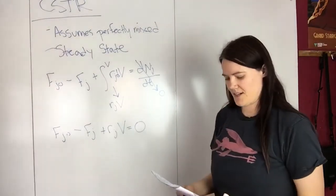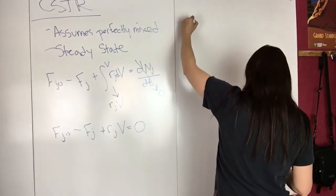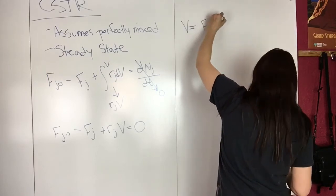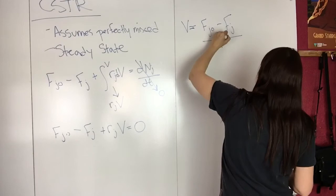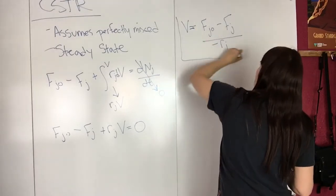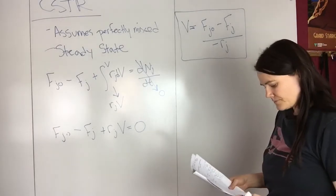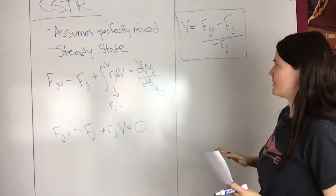What we want from this equation is the volume. We can solve for volume and get V equals FJ0 minus FJ over negative RJ. This is the mole balance for a CSTR.